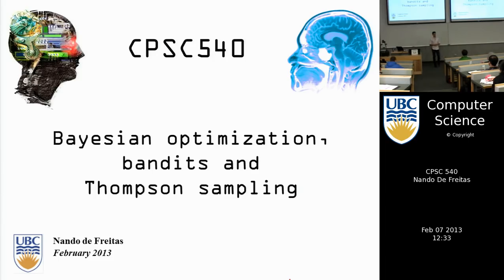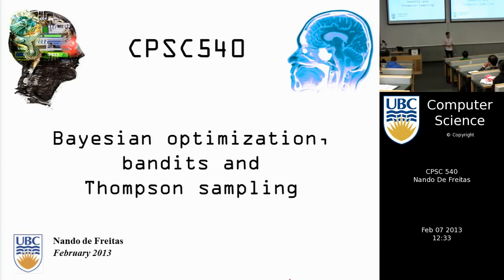Today's class will use Gaussian processes as one of the tools for a technique called Bayesian optimization, which is a form of doing optimization when you don't have an explicit expression for the objective function.